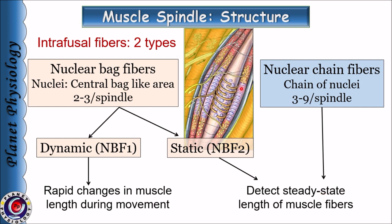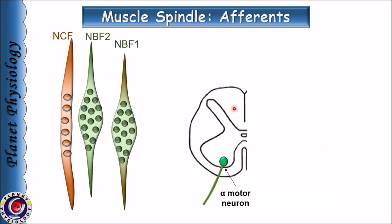Usually there are three to nine nuclear chain fibers in the muscle spindle. In this case, nuclei are arranged as a single chain in the central portion of these fibers. Now coming to the afferents of muscle spindle — afferent fibers innervate the central portion of nuclear bag as well as nuclear chain fibers and they are of two types.